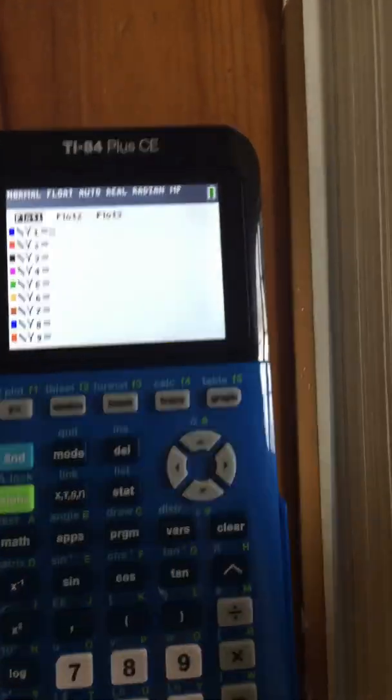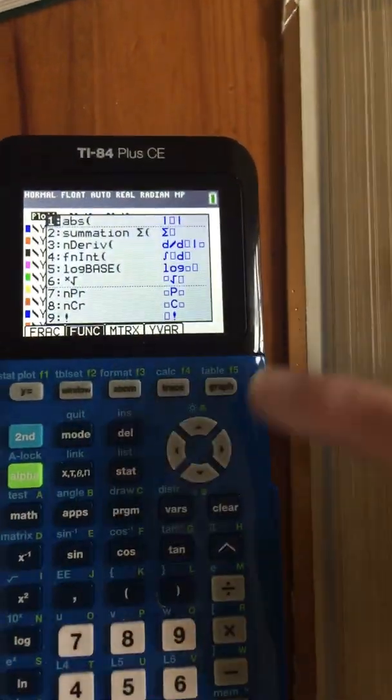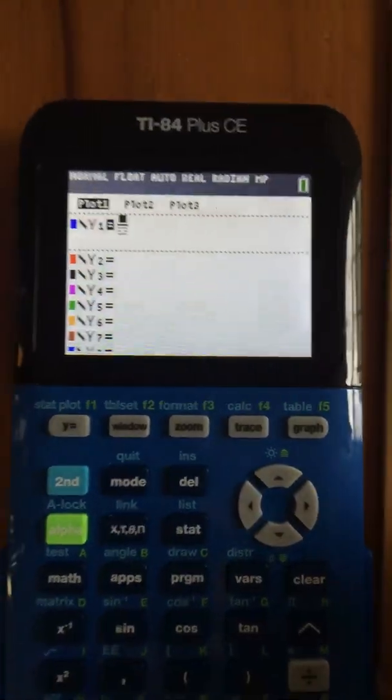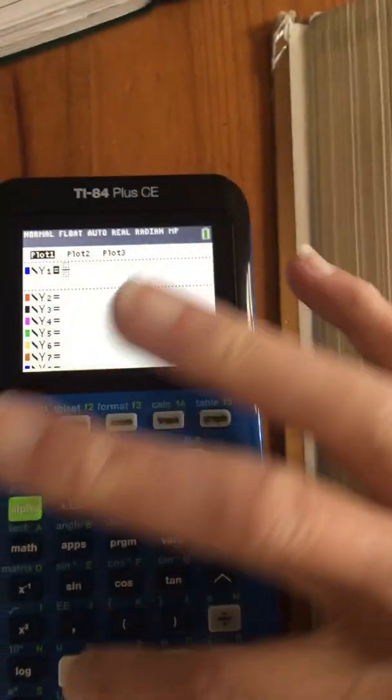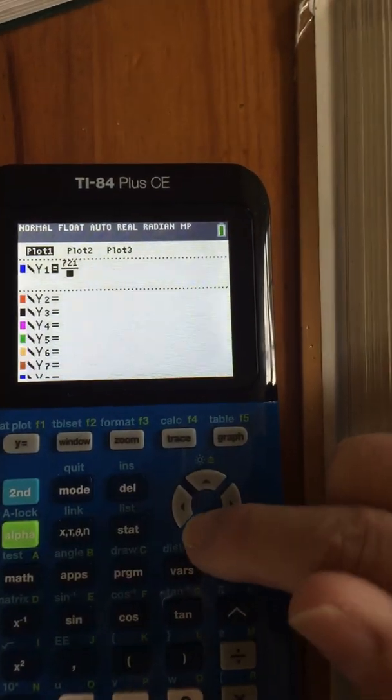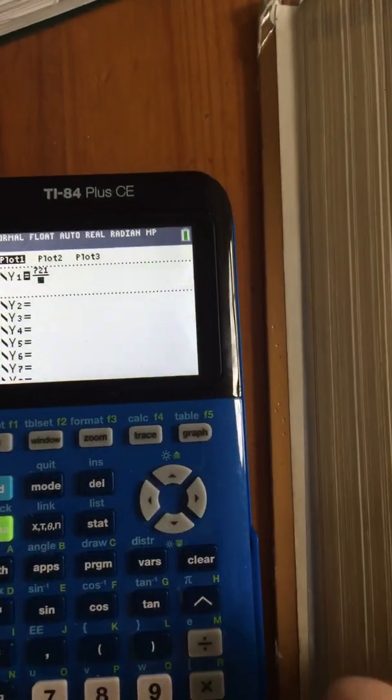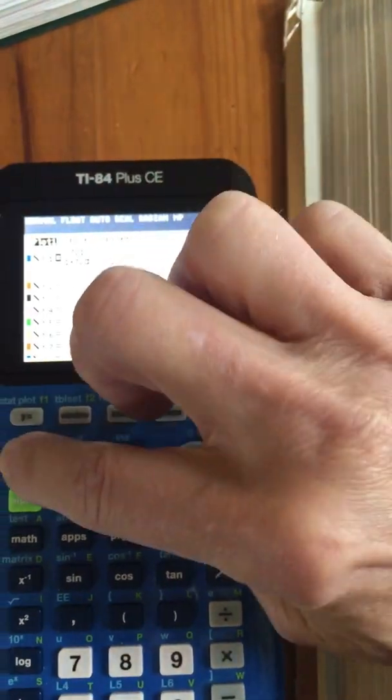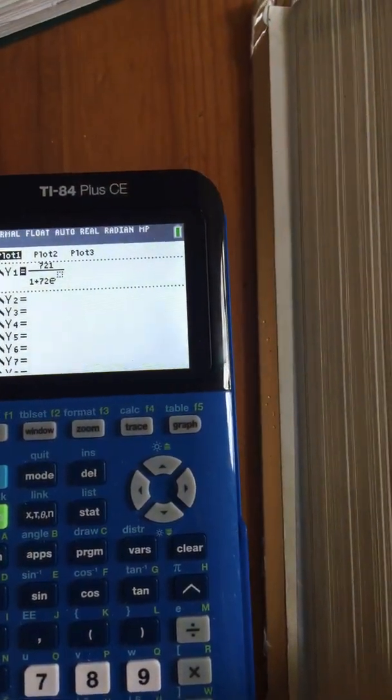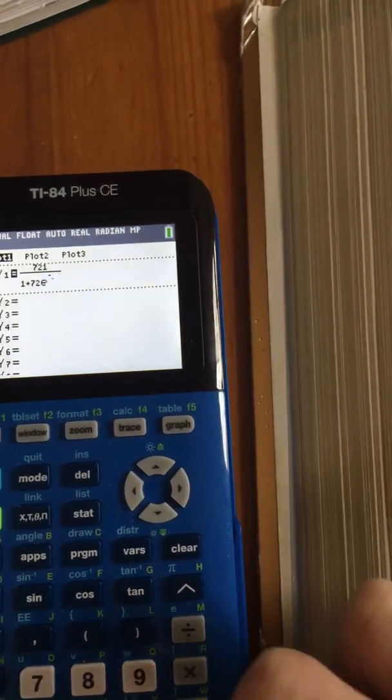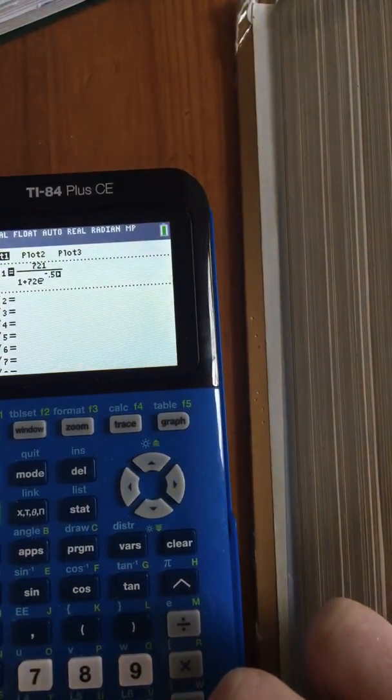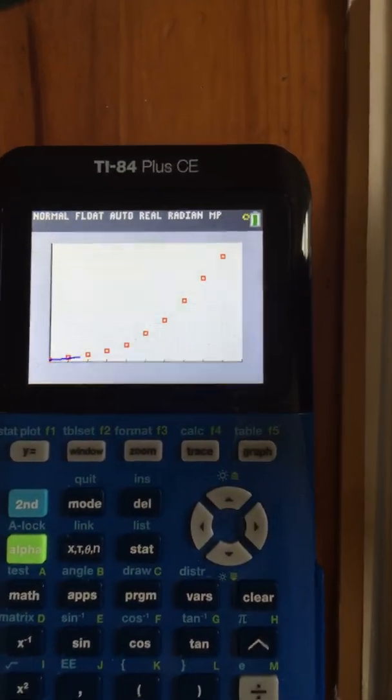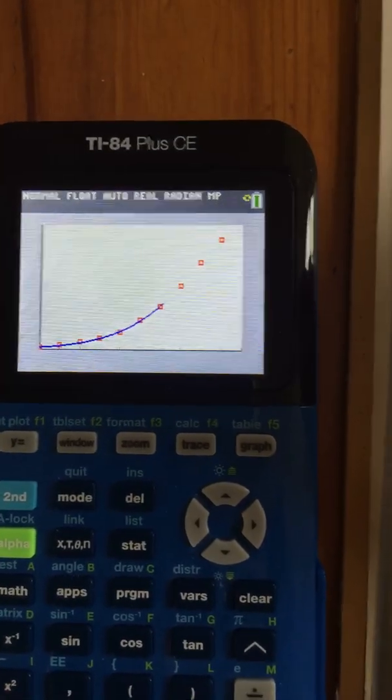Now that we've got it, we can go back over to y equals and put it in. I need the numerator over denominator. And so this is 721 over 1 plus 72E to the negative 0.526X. So I got it in. If I hit graph, it should draw a line through the dots, which is very satisfying. Isn't that great? So fun.